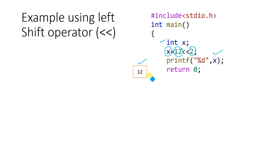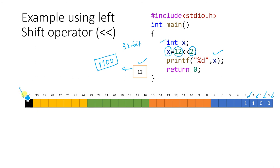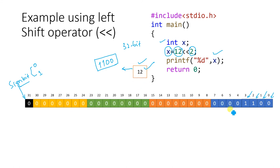Let us take the number 12. Every integer is represented as a 32-bit number, so I am drawing 32 boxes here, numbered 0 through 31. The binary equivalent of 12 is 1100. This binary value is written towards the right side of the allocated space, so it is represented as 1, 1, 0, 0. The remaining boxes are filled with zeros. The leftmost bit is the sign bit — sign bit 0 means positive and sign bit 1 means negative. Since 12 is positive, all remaining bits are 0.